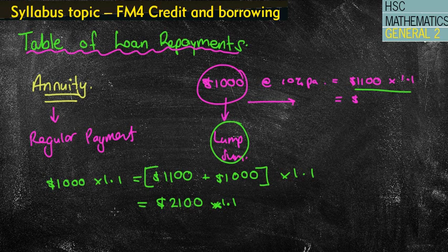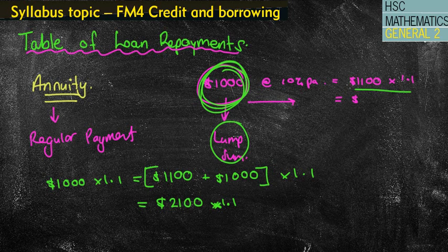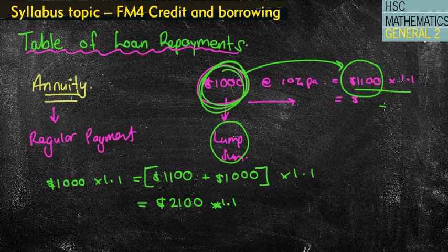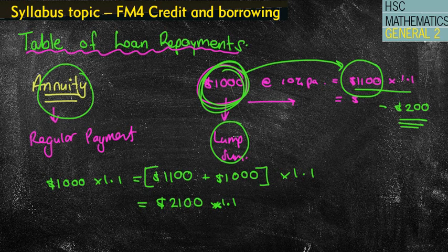Often with loan repayments, after you borrow the money — let's say this is a loan repayment where we borrow $1,000 at 10% per annum — after the first year we owe $1,100. With a loan repayment we then want to repay some of that money, say $200. That $200 can be looked at as an annuity because it's going to be a regular payment. So it's kind of like compound interest but a bit more complex, and we do have annuity formulas and all sorts of things.